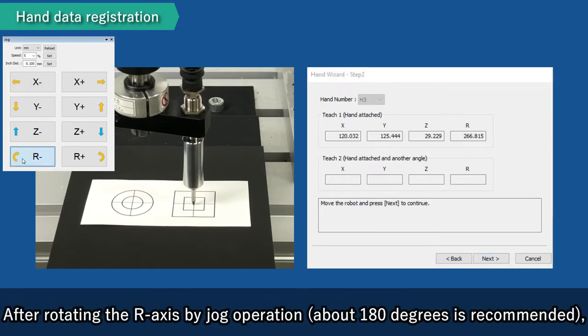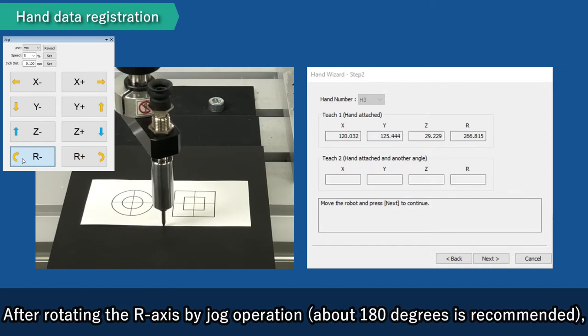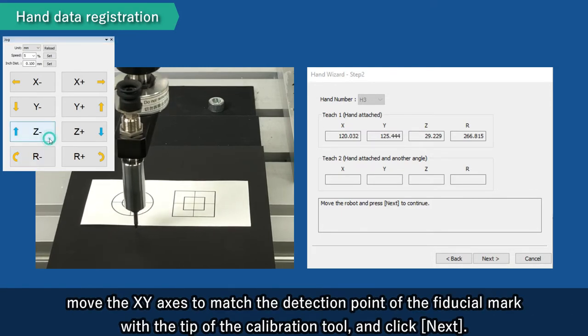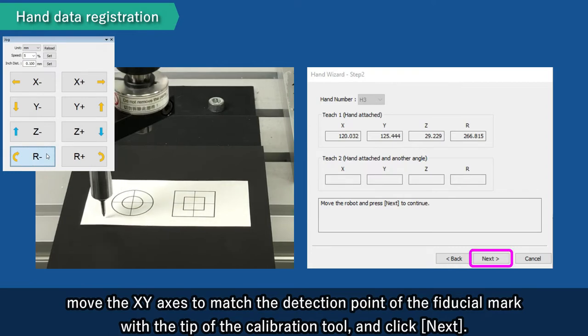After rotating the R-axis by jog operation, move the XY-axis to match the detection point of the fiducial mark with the tip of the calibration tool and click Next.